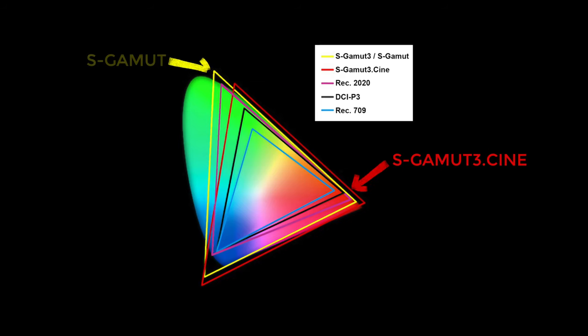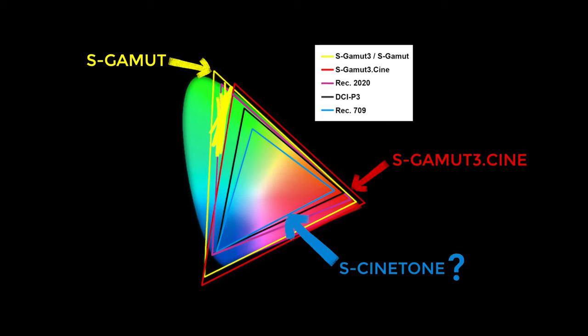It occurred to me that using S-Log3 for your gamma and S-Cinetone for your color space might lead to a bit of a dilemma. Usually when you use S-Log3 you'd want to decode that big log curve and color space with a lookup table — LUTs that are usually designed with S-Gamut3Cine in mind. S-Gamut3Cine is still a very large color space but tends to give more flattering skin tones compared to S-Gamut. S-Cinetone's color space is said to be a similar size to S-709, basically Rec-709, so applying a LUT designed for S-Gamut3Cine might give quite odd results.